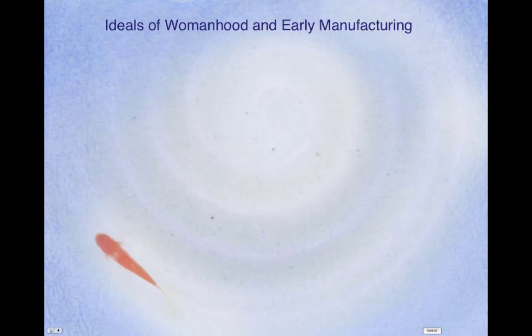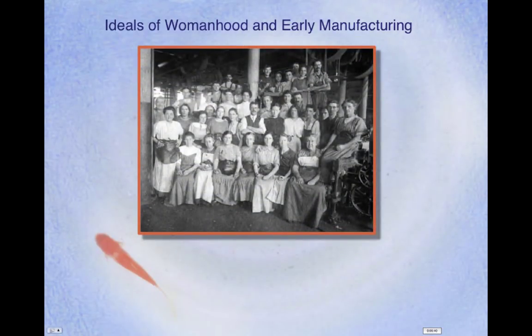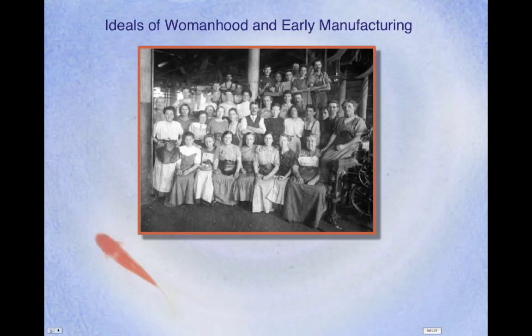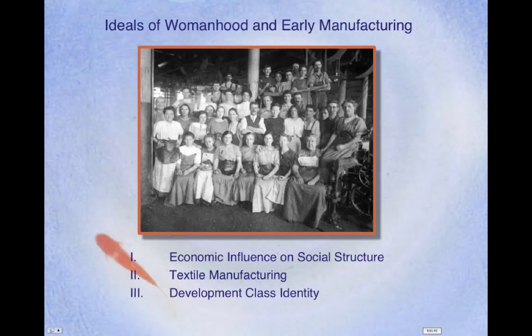Welcome back. Our lecture today is an overview of how women's roles and society's perspective of them were affected by the changing economy of the first half of the 1800s. The image on the screen is from Lowell Mills in the 1840s. This mill produced textiles, which refers to cloth. Textile production was the first major industrial product in the US. Our lecture will cover three main topics: economic influence on social structure, textile manufacturing, and development of class identity.